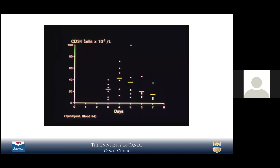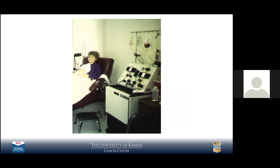Studies back in 1994 showed that CD34 cells — markers of stem cells entering the bloodstream — could be found in adequate numbers on about day three, hitting a peak on about day four after GCSF injections, then dropping significantly after about day seven. We used apheresis technology for collecting stem cells from patients.